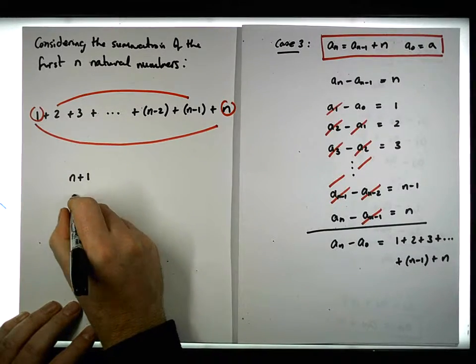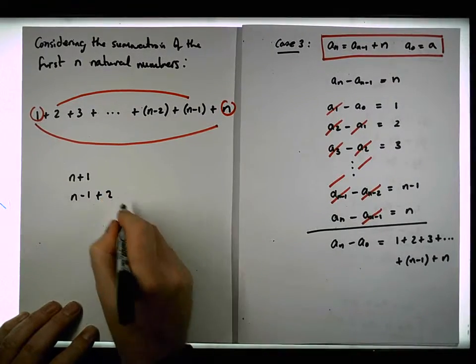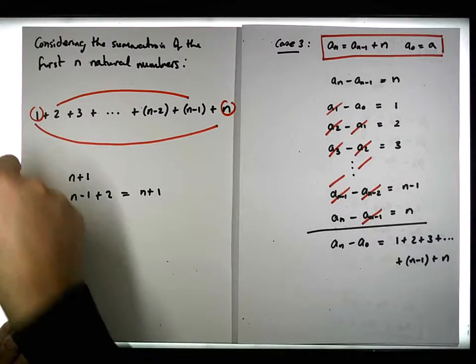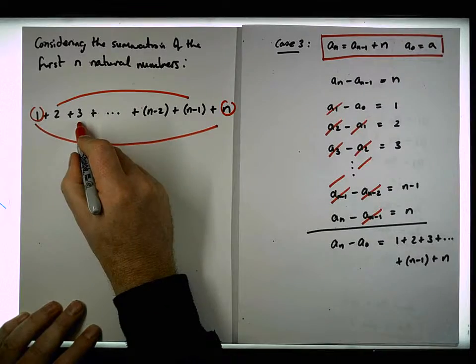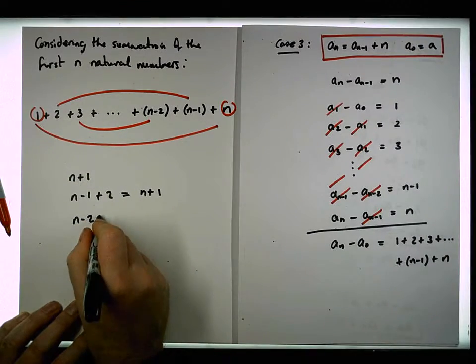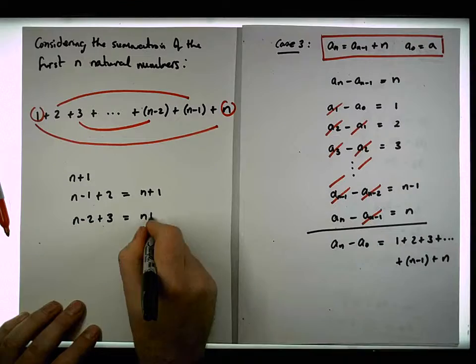Adding n minus 1 plus a2, which equals n plus 1. You can probably see what's happening. If we add the third number to the third last number, what do we end up with? We end up with n minus 2 plus 3, which equals n plus 1.